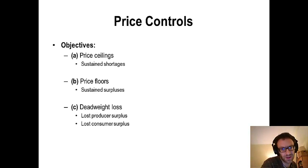So the objectives of this lecture are to touch on the two major forms of price controls that we're ever going to discuss: price ceilings and price floors, the immediate consequences - sustained shortages on the price ceiling side, sustained surpluses on the price floor side - and then deadweight loss that is going to result directly out of those surpluses and shortages. And we'll discuss how that impacts both producer and consumer.